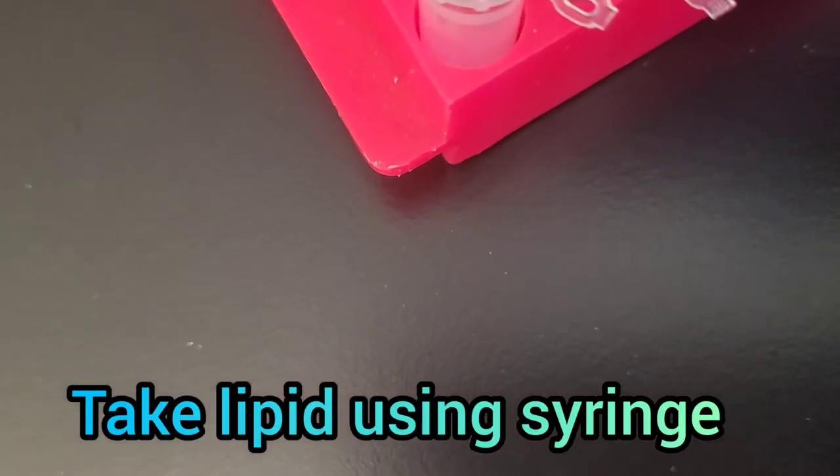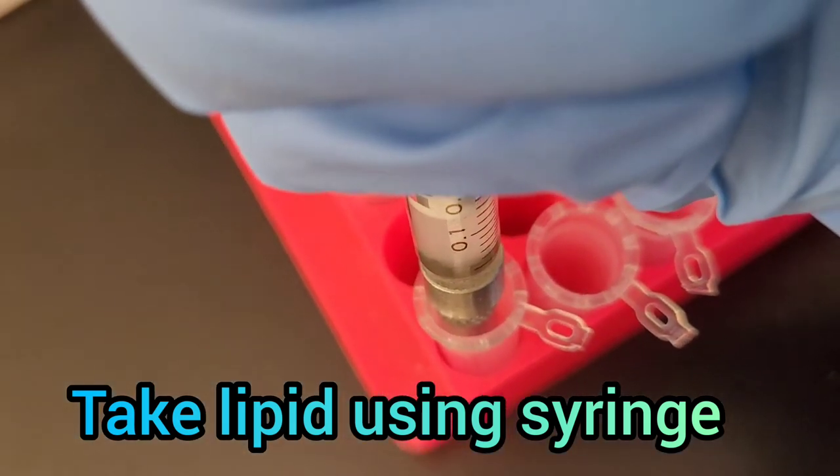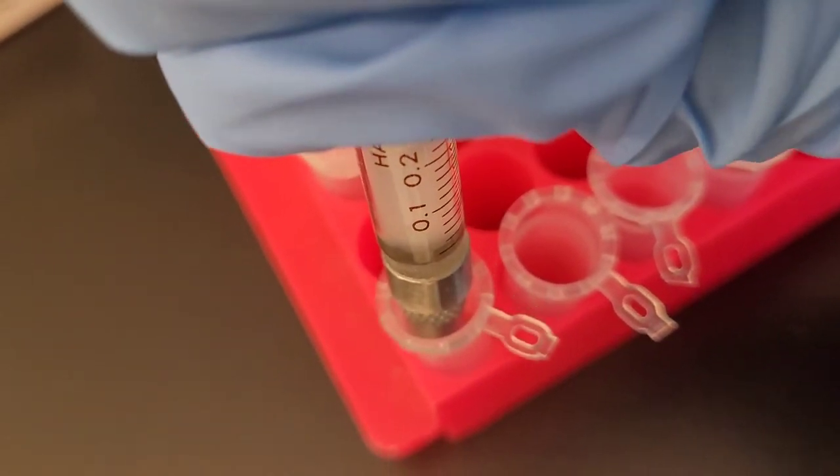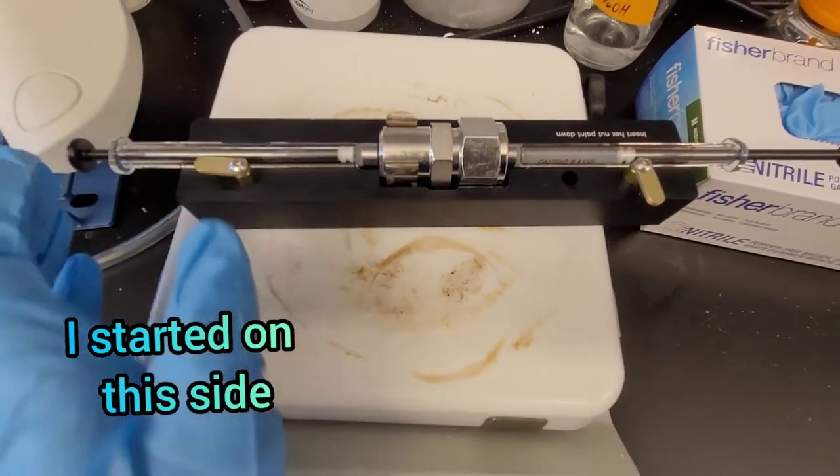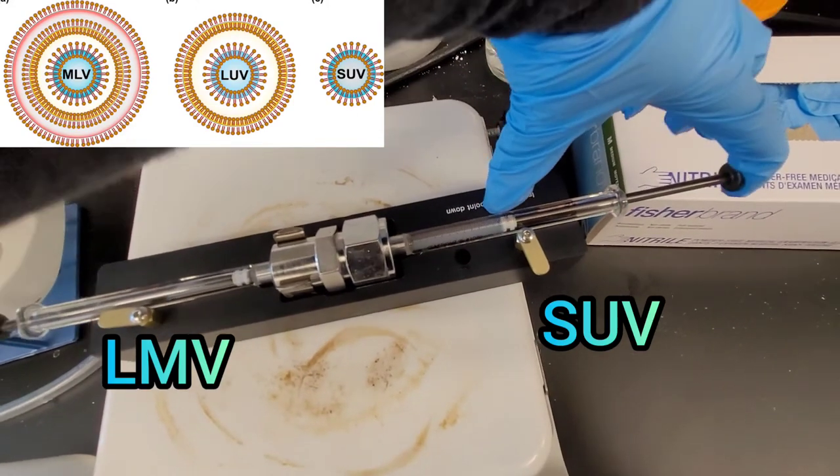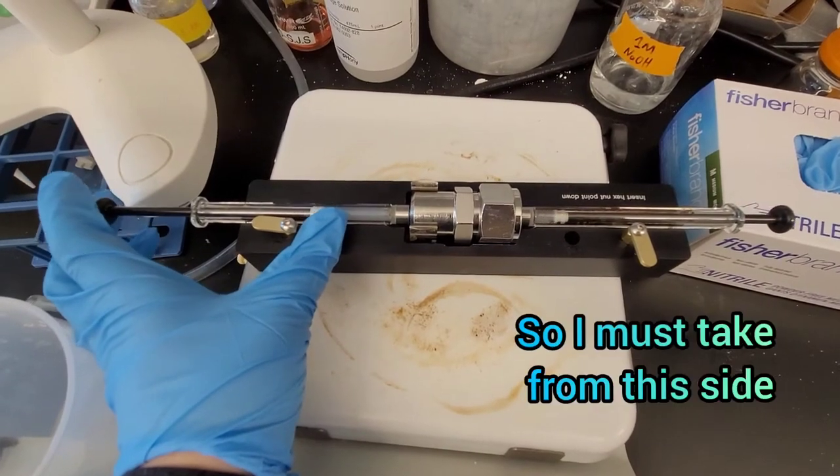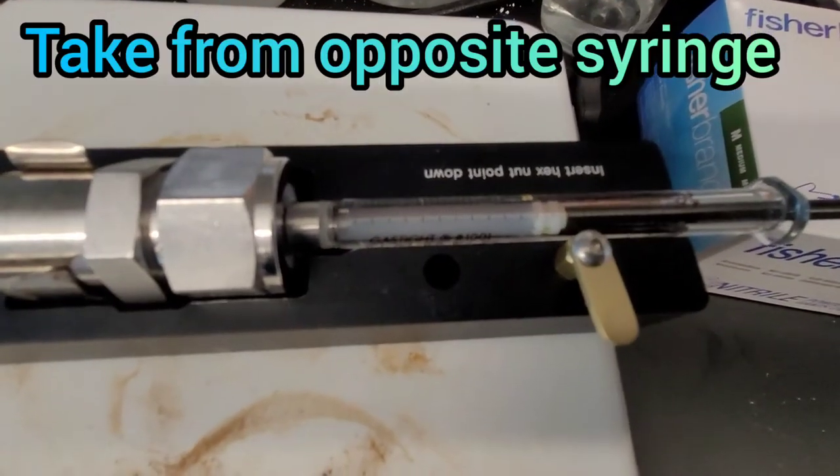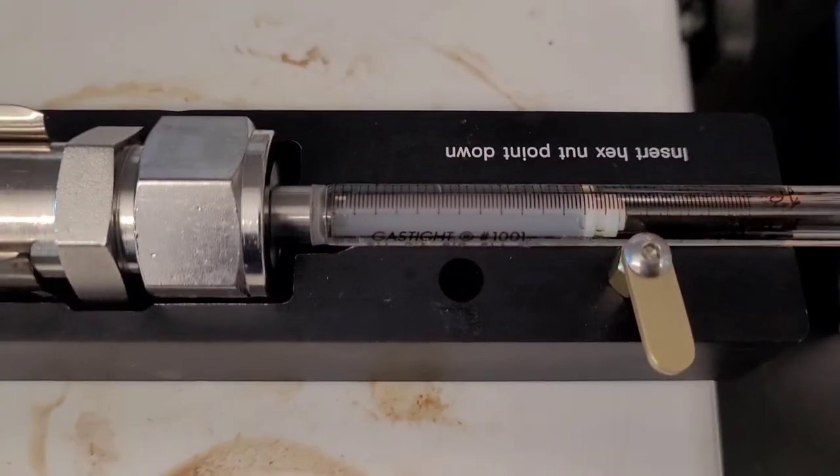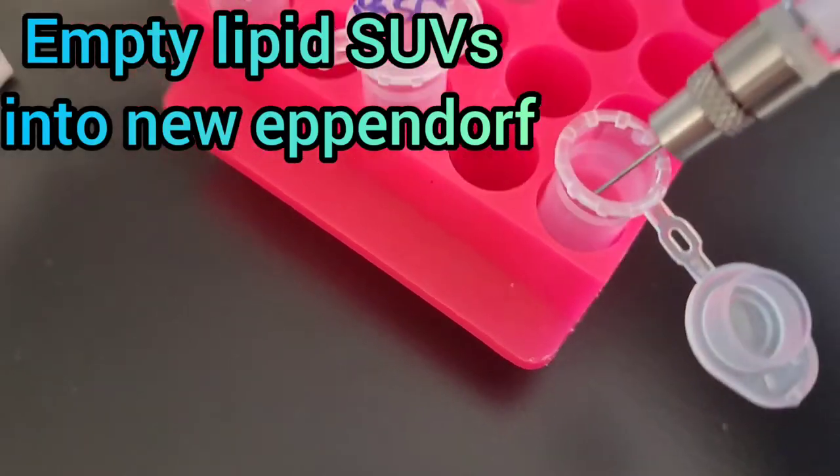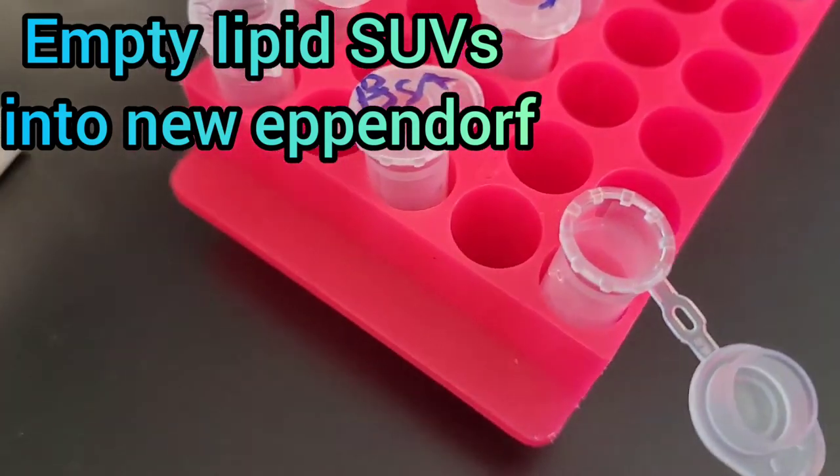Then you take in your lipid with one syringe and screw in the syringes. You have to remember which side you start from because the start side has your large multilamellar vesicles on one side of the filter, and on the other syringe you will have your small unilamellar vesicles which have passed through the filter and are smaller and better for use. Then you empty it into a new clean Eppendorf.